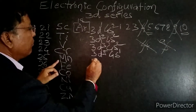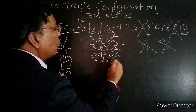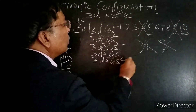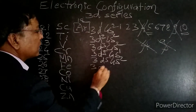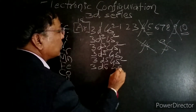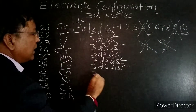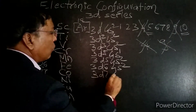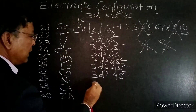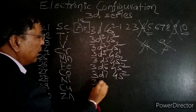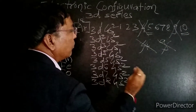Next, Manganese — we take d5, so [Ar] 3d5 4s2. Then Iron: [Ar] 3d6 4s2. Then Cobalt: [Ar] 3d7 4s2. Then Nickel: [Ar] 3d8 4s2.